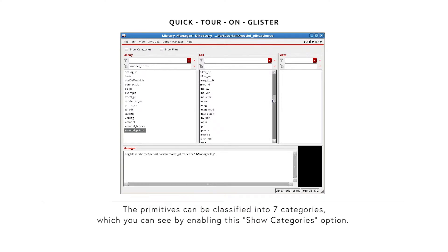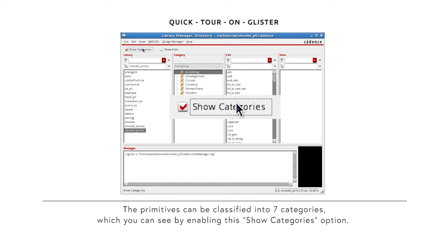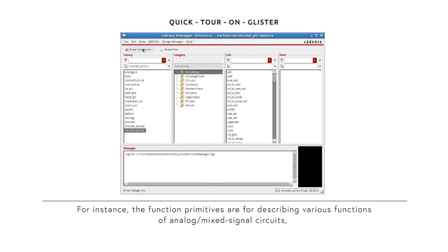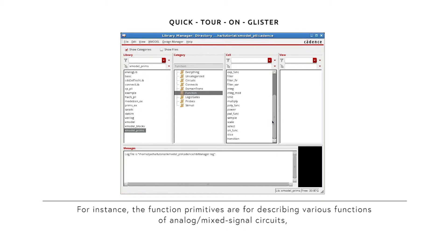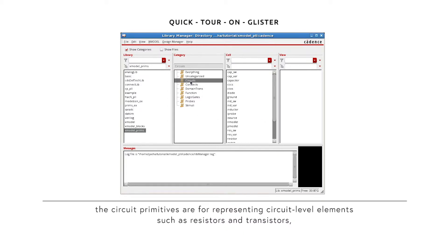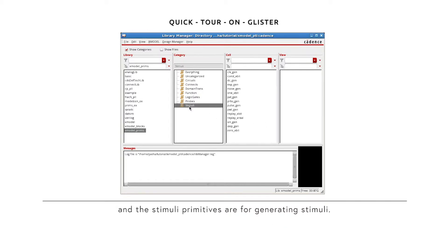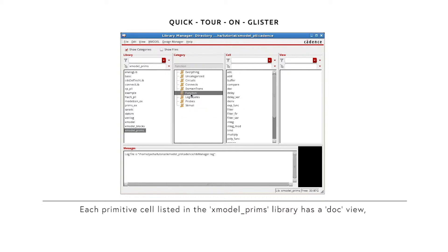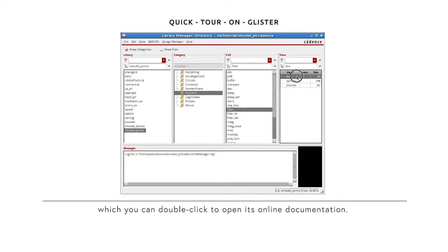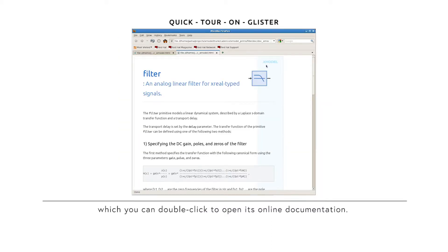The primitives can be classified into seven categories, which you can see by enabling the Show Categories option. For instance, the function primitives are for describing various functions of analog mixed-signal circuits, the circuit primitives are for representing circuit-level elements such as registers and transistors, and the stimuli primitives are for generating stimuli. Each primitive cell listed in the X-model prims library has a doc view, which you can double-click to open its online documentation.